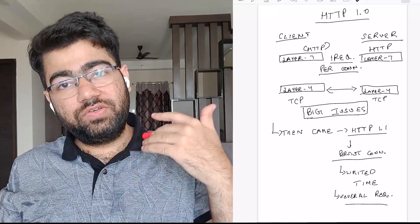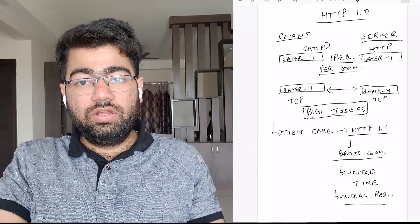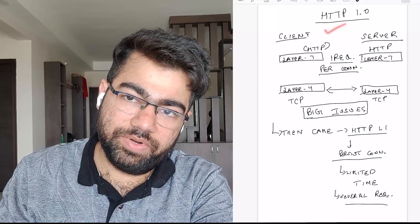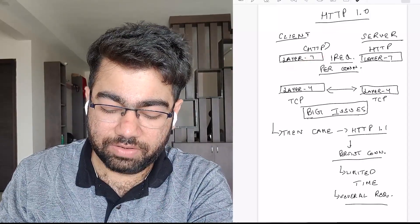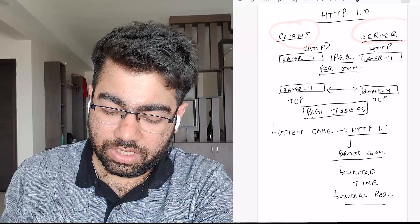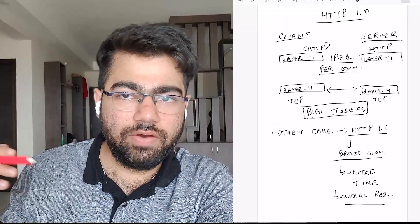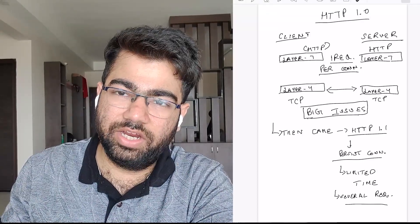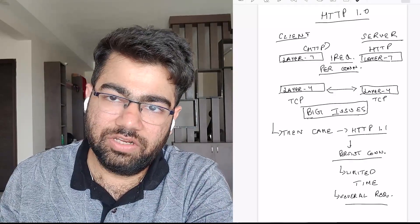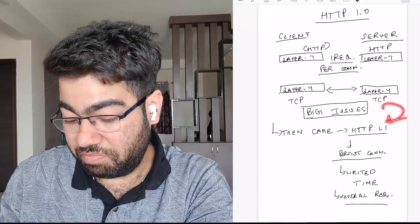Now let's talk about what's happening at Layer 7. The first HTTP protocol was HTTP 1.0, which had a lot of limitations. It said there can be only one request per connection — so for every request you had to establish a new TCP connection. Since connection establishment time is significant, websites would take a lot of time to load. This was a big issue.